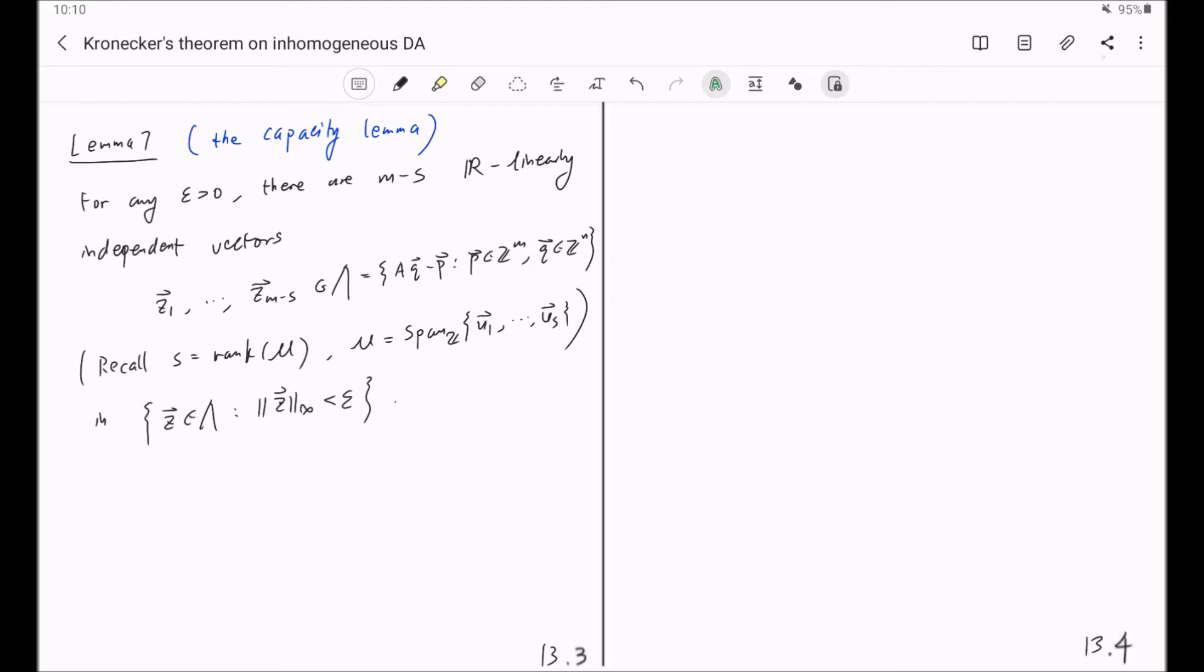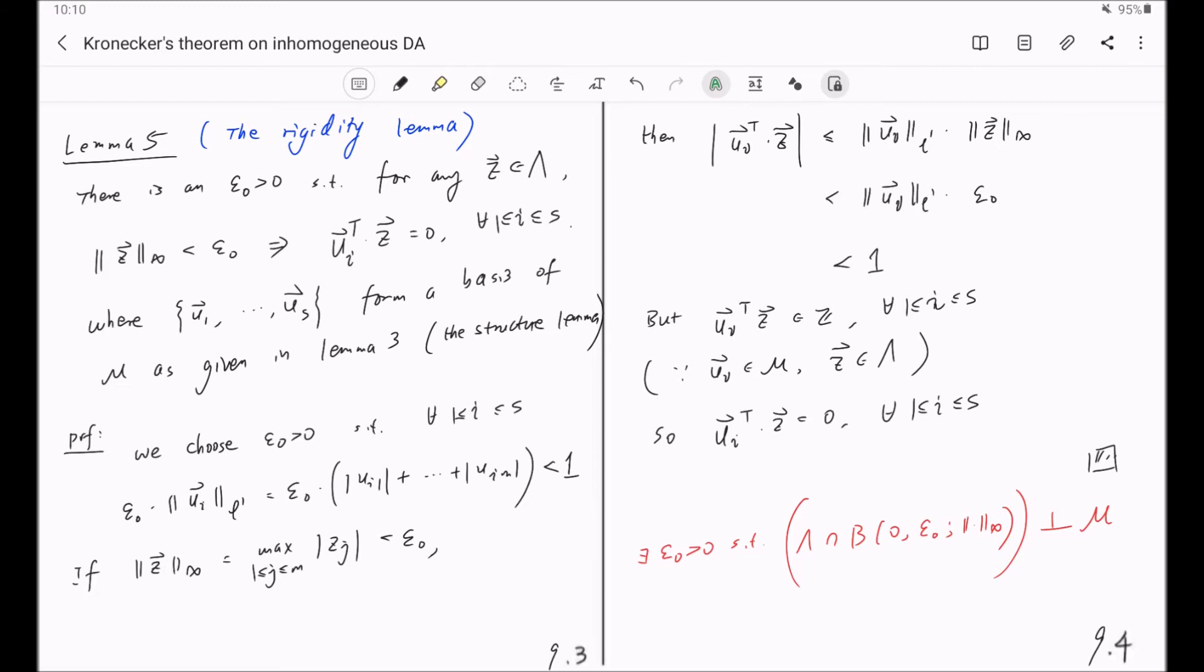And you may want to compare this lemma with our previous lemma 5, the rigidity lemma, which says any vector in lambda close to the origin will be orthogonal to the subspace generated by M, which tells you that the behavior of vectors in lambda close to the origin could be very rigid in terms of their orientation with respect to M.